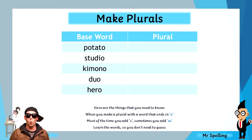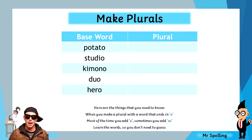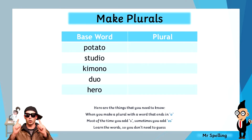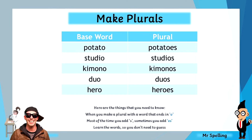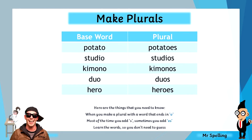Now it's your turn to apply the spelling rules. Here are some base words — can you make plurals as the music plays? The words are potato, studio, kimono, duo, and hero. And the answers are: potato becomes potatoes with an ES, the same as tomatoes. Studio becomes studios with an S — again, it ends vowel O so just add an S. Kimono is a foreign word, so just add S. Duo becomes duos with an S. And hero is one of the words which ends in ES, so it becomes heroes.